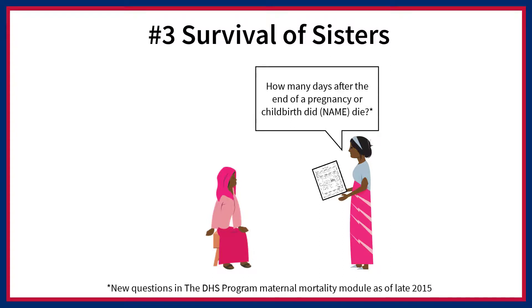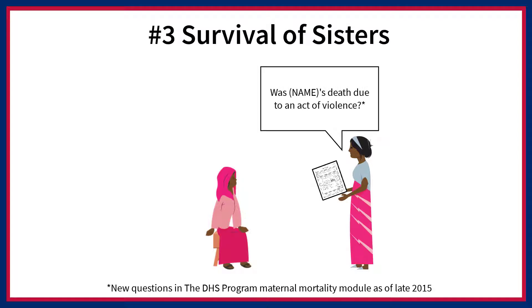If the sister died within two months after childbirth or end of pregnancy, the interviewer asks how many days after childbirth or the end of pregnancy the sister died. The interviewer then asks additional questions to determine whether the death was accidental or due to violence.